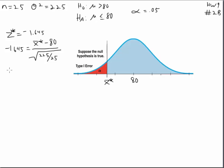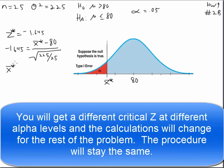And what we find after we solve that equation is that if alpha equals 0.05, then our critical x bar is 75.065.